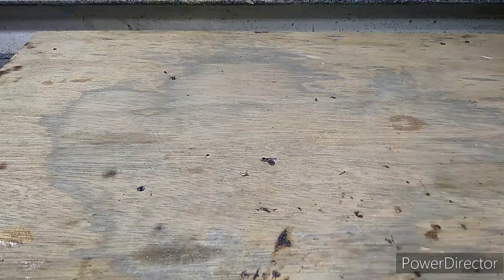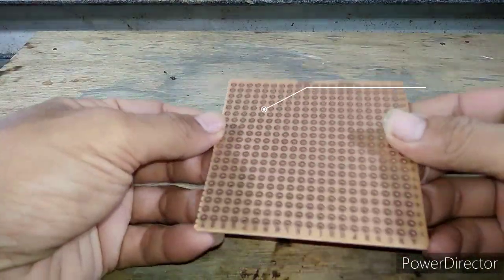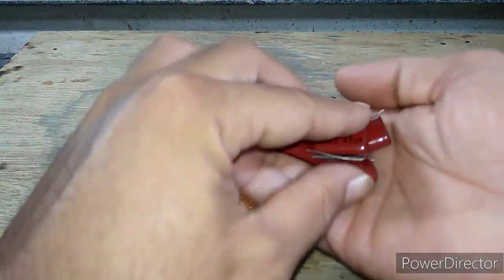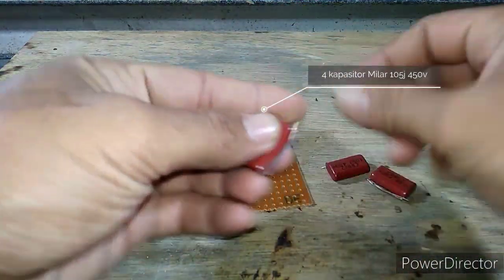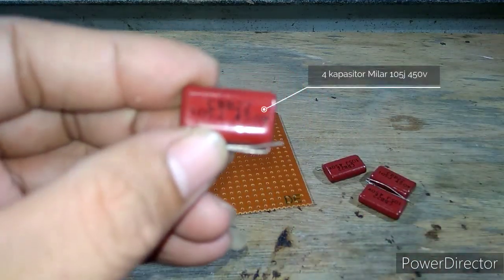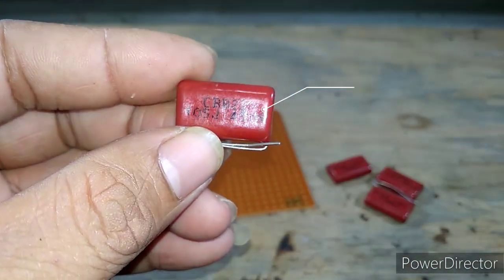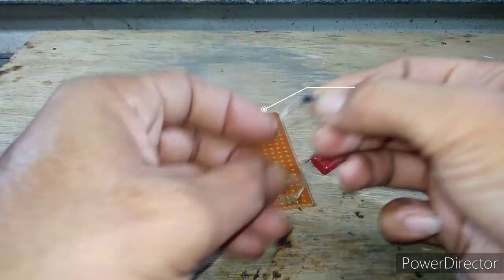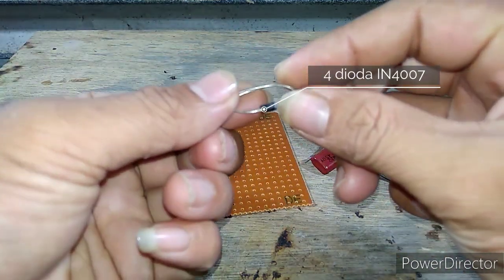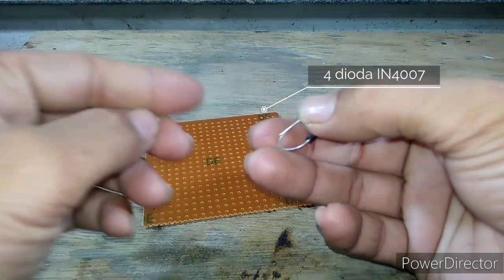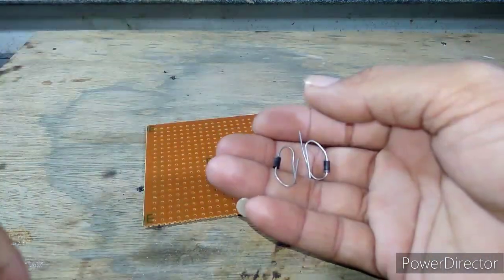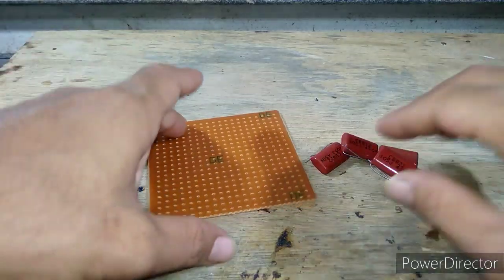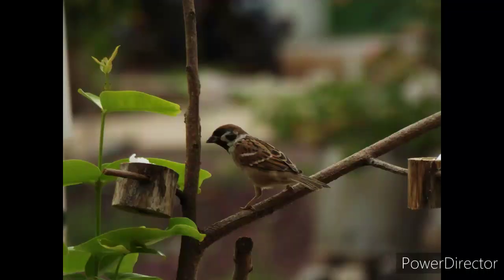Untuk komponen tambahan, saya gunakan papan PCB, 4 buah kapasitor milar 105 450V, dan 4 buah dioda IN4007. Untuk merangkainya, nanti saya sertakan dengan skemanya. Bagaimana prosesnya, simak terus videonya.